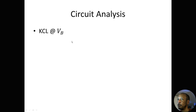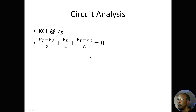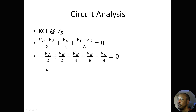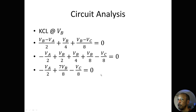KCL at VB gives me: VB minus VA over 2 plus VB over 4 plus VB minus VC over 8 equals 0. Rearranging: negative VA over 2 plus VB over 2 plus VB over 4 plus VB over 8 minus VC over 8 equals 0, which simplifies to negative 4 VA plus 7 VB minus VC equals 0. That's equation 3.